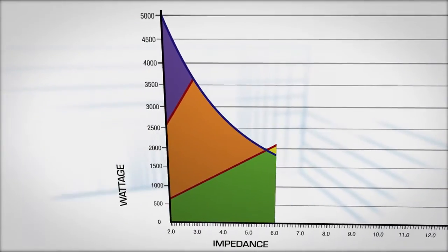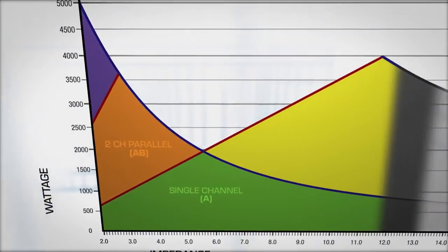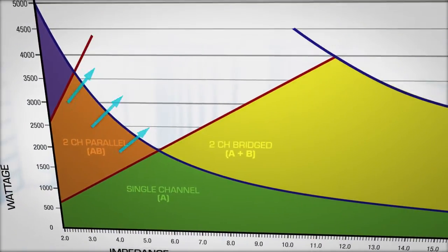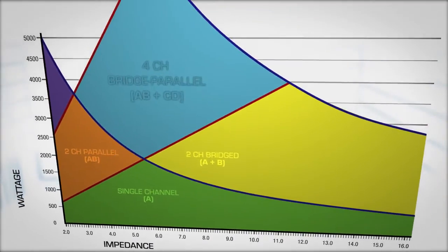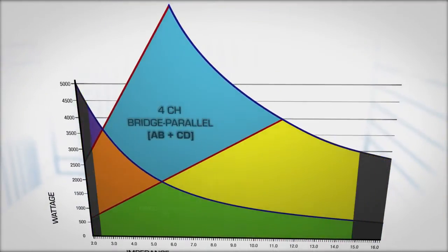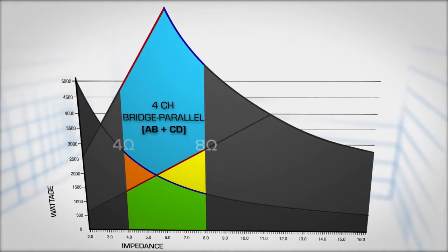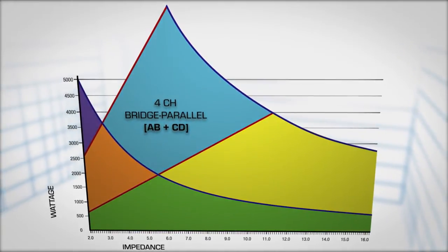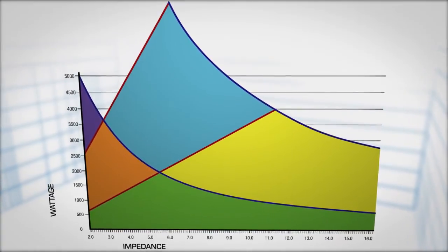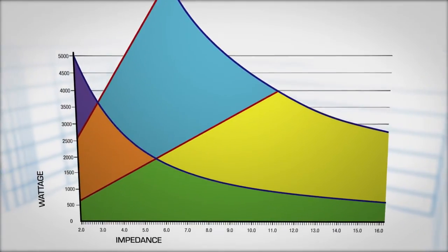But where this flexible amplifier summing technology really shines is taking two channels in parallel and bridging them with another two channels in parallel, opening up a huge amount of power in the four to eight ohm region, where most loudspeakers reside. Remember, the amount of deliverable power in this region will also be limited by the power supply of the amplifier.